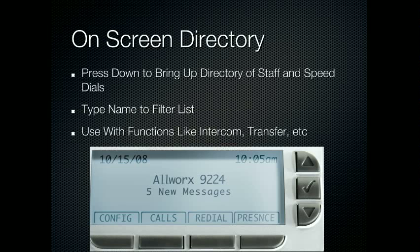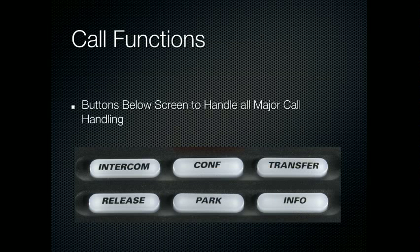One feature to be aware of is an on-screen directory. All of your staff and system-wide speed dials are available to you on your screen. You just press the down arrow to the right of the screen — it'll bring up a list. You can then start typing the name and it will filter the list down. You can use this not just to dial your phone, but also with functions like intercom and transfer. All of your call functions are grouped together right under the screen.